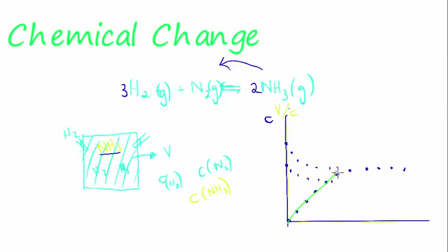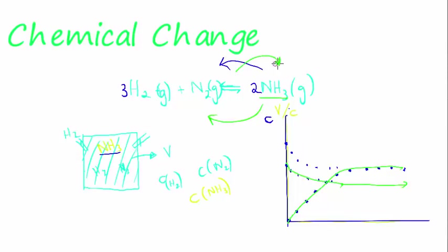The concentration of reactants and products is never zero for the reactants — remember, for non-reversible reactions, one of the reactants went down to zero. This one doesn't go down to zero, because it still decomposes. At some point, the amount of ammonia produced and the amount that decomposes every second is equal, so there's no more change in the concentration. The reaction hasn't stopped, but for every mole produced, a mole decomposes.